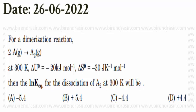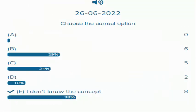Options were minus 5.4, plus 5.4, minus 4.4, plus 4.4. Those who participated in the poll: 0% said A, 29% said B, 24% said C, 10% said D, and 38% said I don't need the concept.